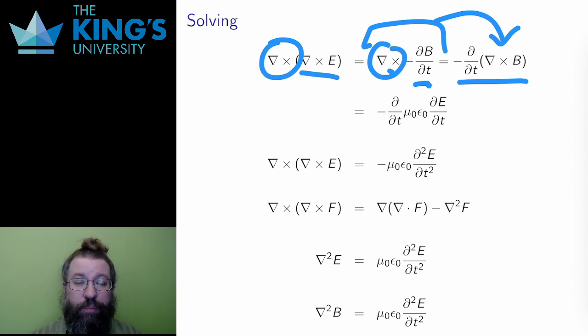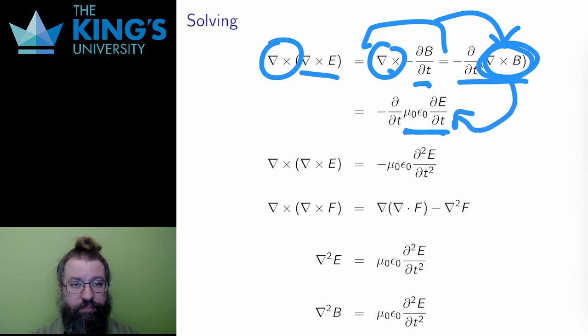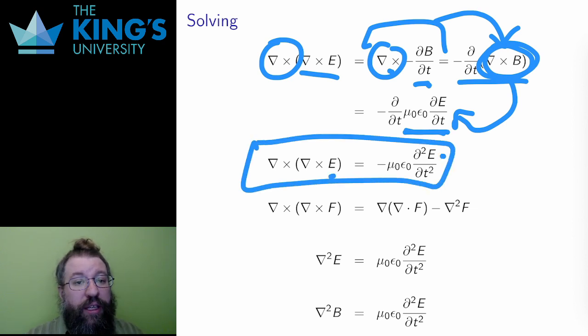Then I can use Maxwell's third equation to replace the curl of B with the time derivative of E. There is no current here, so the J term doesn't exist. I've managed to get away from equations that involve E and B, and I've produced a differential equation that only involves E. So, this is progress.